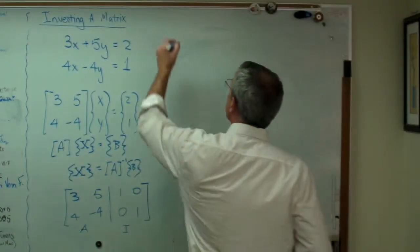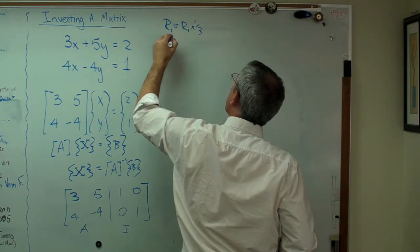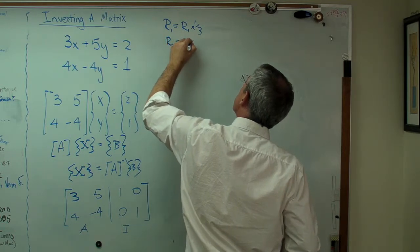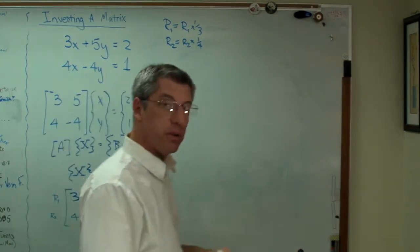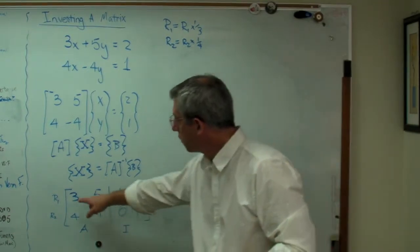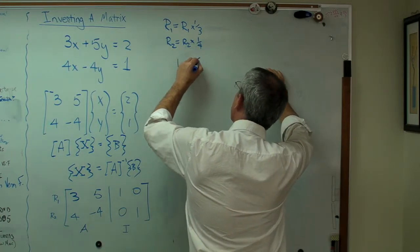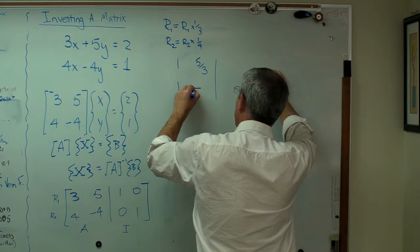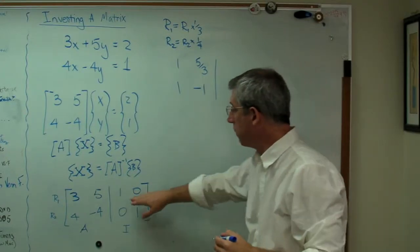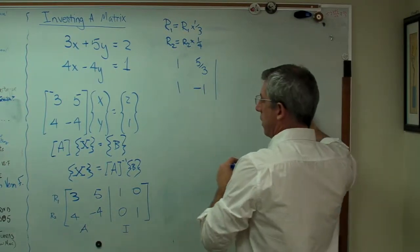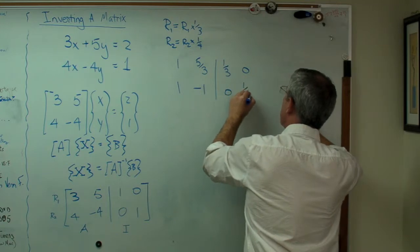So let's do that. I'm going to start by saying R1 equals R1 times 1/3, and R2 equals R2 times 1/4. Now just so we're clear on this, row 1, R1, is there, and row 2, R2, is right there. So I'm going to divide the first row by 3 and the second row by 4. I think you see why here. So that's going to be 1, 5 over 3, 1, minus 1. Now I'm going to divide this by 3 as well. I have to do the same thing to this side of the matrix that I do to the other side. So that's now going to be 1/3, 0, and 0, 1/4.